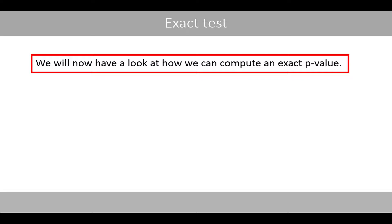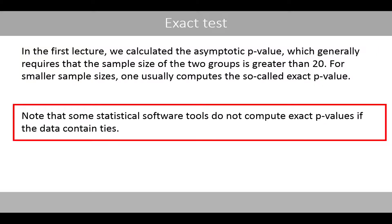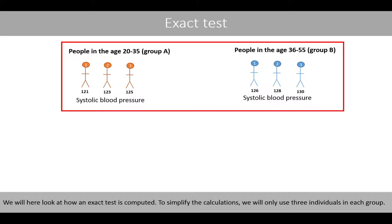We'll now have a look at how we can compute an exact p-value. In the first lecture, we calculated the asymptotic p-value, which generally requires that the sample size of the two groups is greater than 20. For smaller sample sizes, one usually computes the so-called exact p-value. Note that some statistical software tools do not compute exact p-values if the data contain ties.